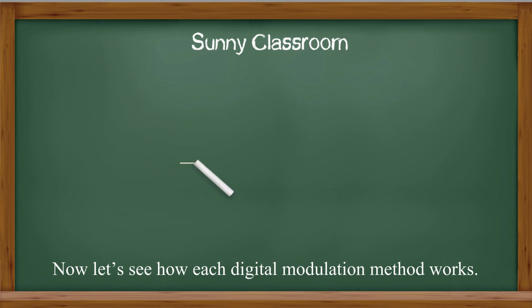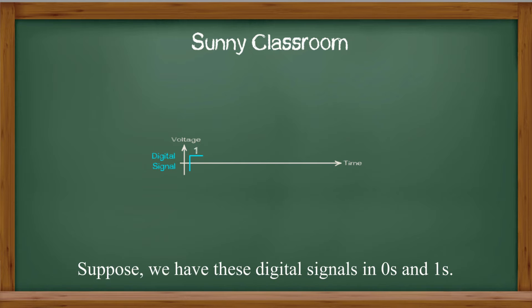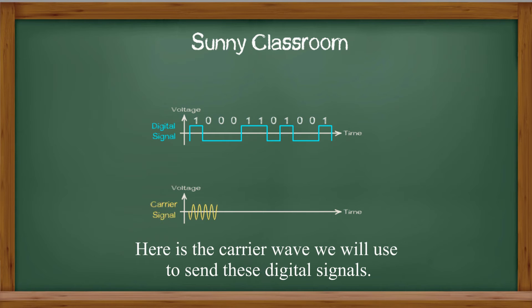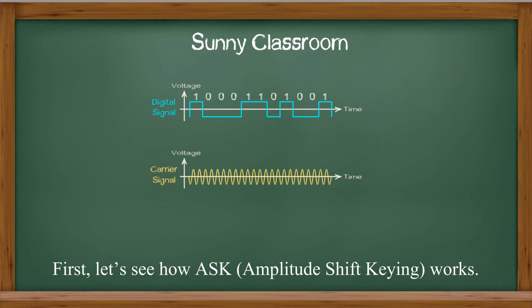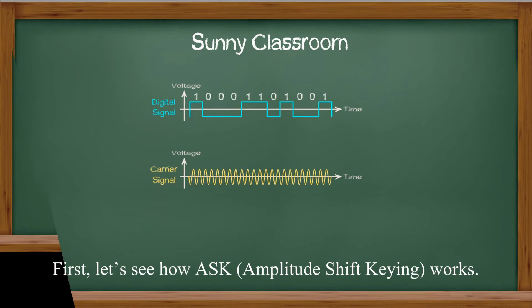Now let's see how each digital modulation method works. Suppose we have these digital signals in zeros and ones. Here is the carrier wave we will use to send these digital signals. First, let's see how ASK works.